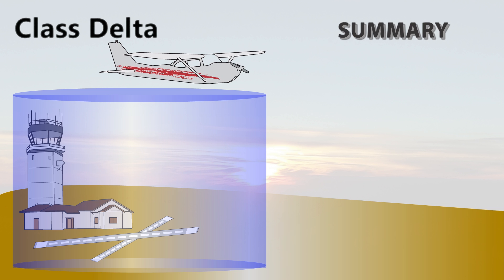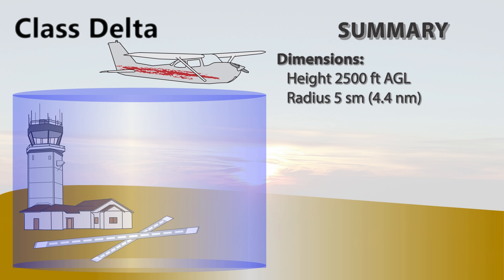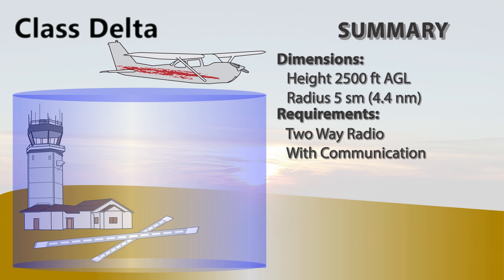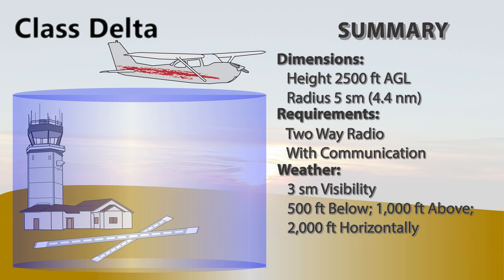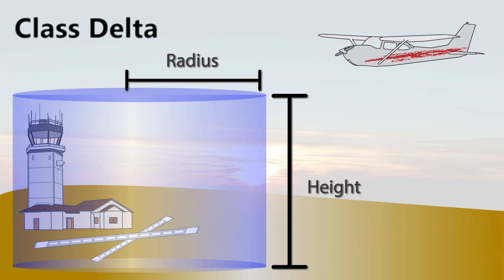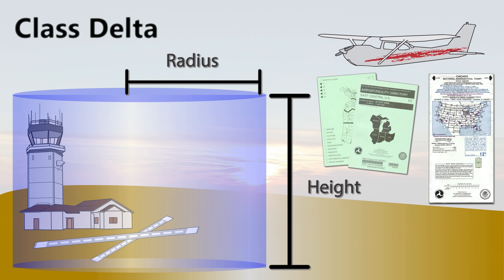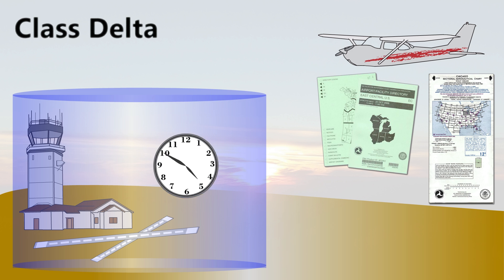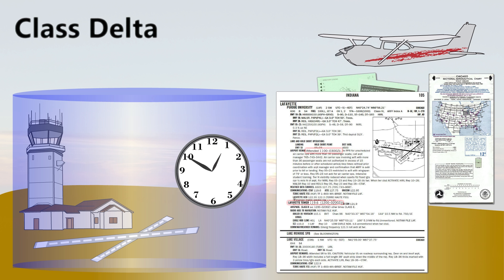In summary, Class Delta airspace is typically 2,500 feet AGL with a five statute mile radius. To operate within a Class D, all we need is an operable two-way radio with established two-way radio communication. While operating, we must maintain VFR with three statute miles visibility and 500 feet below, 1,000 feet above, and 2,000 feet horizontally from clouds. We must also maintain a speed restriction of 200 knots or less. Since the size and shape of each Class D is individually tailored, it is important to check all resources including the current airport facility directory and aeronautical charts to determine the dimensions of the airspace at each airport you plan to fly in or out of. Also, not all control towers operate around the clock, so check the current AFD to know when the tower is operating.